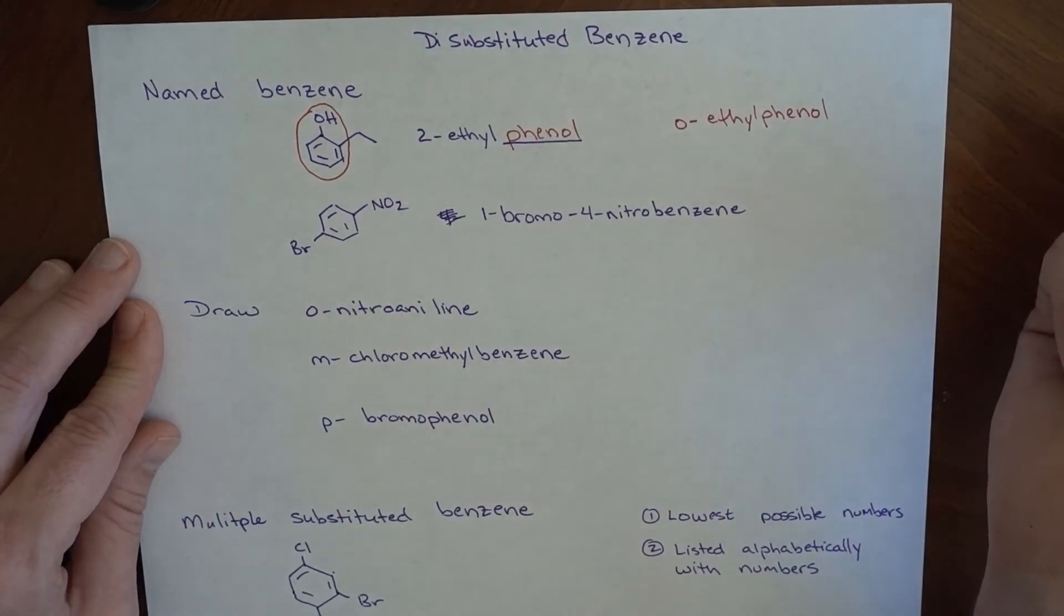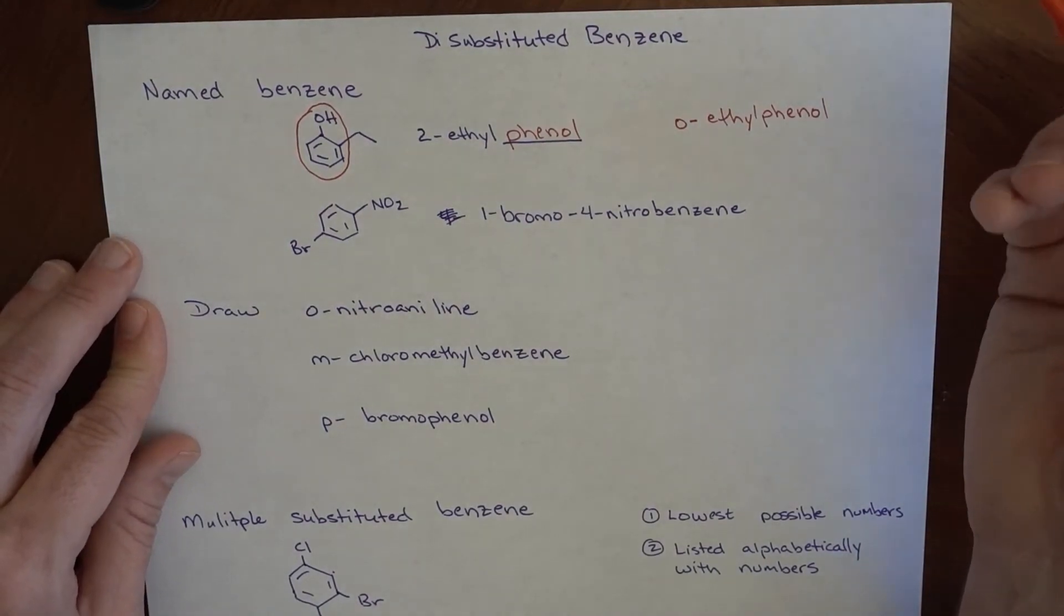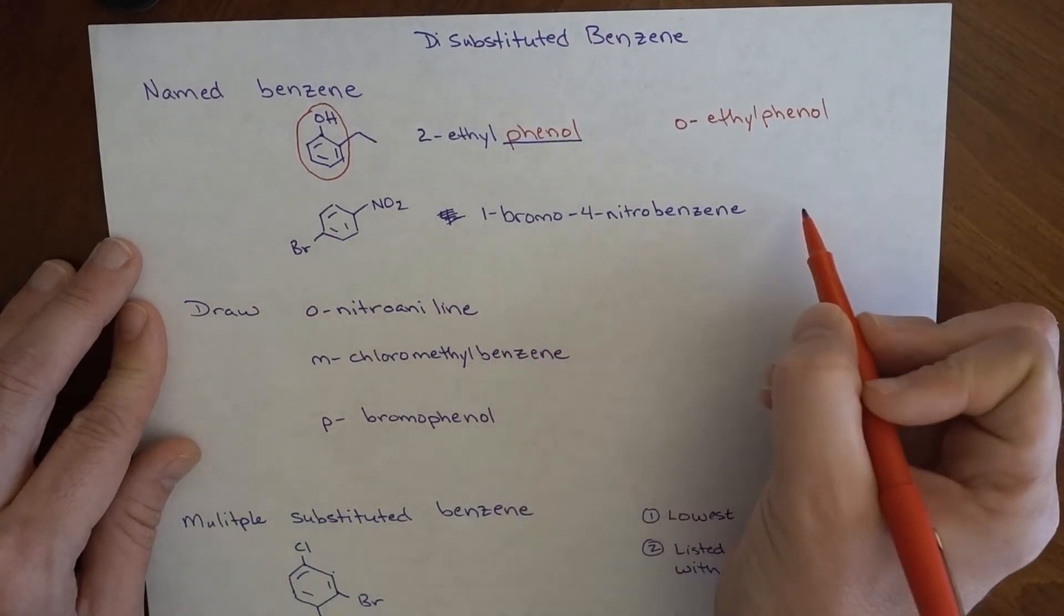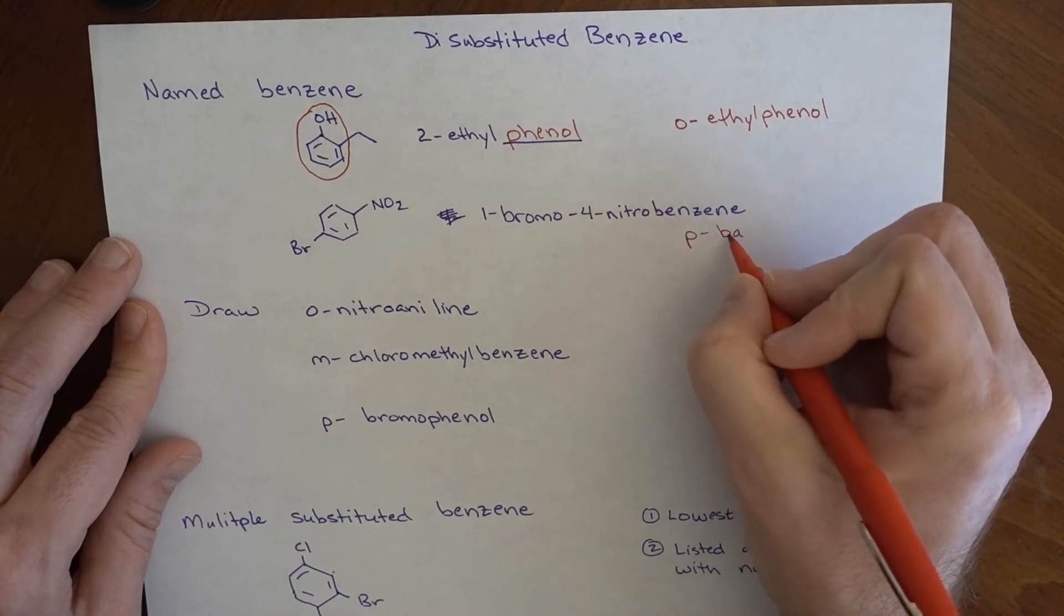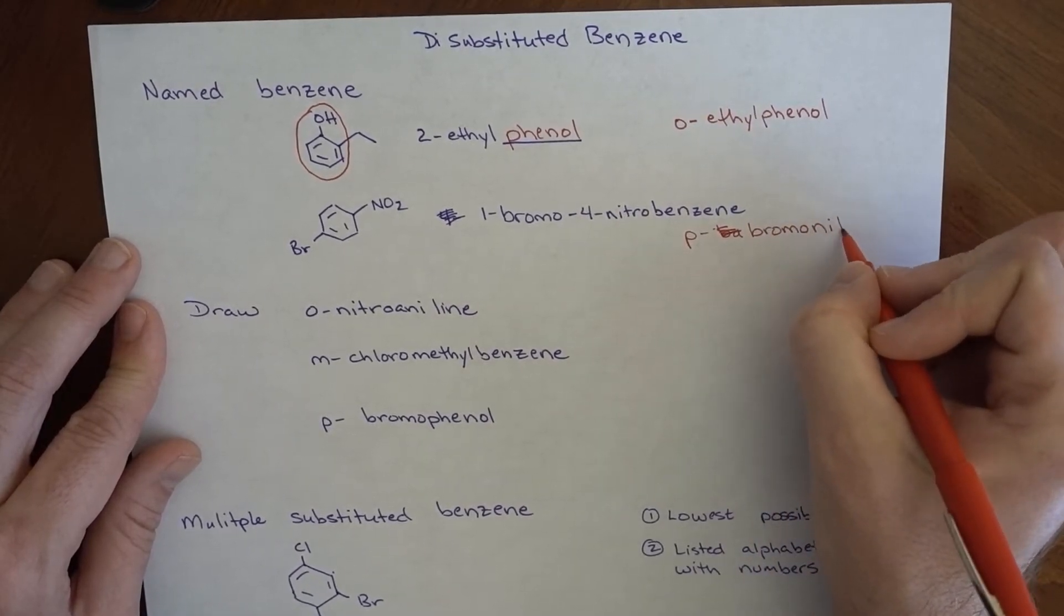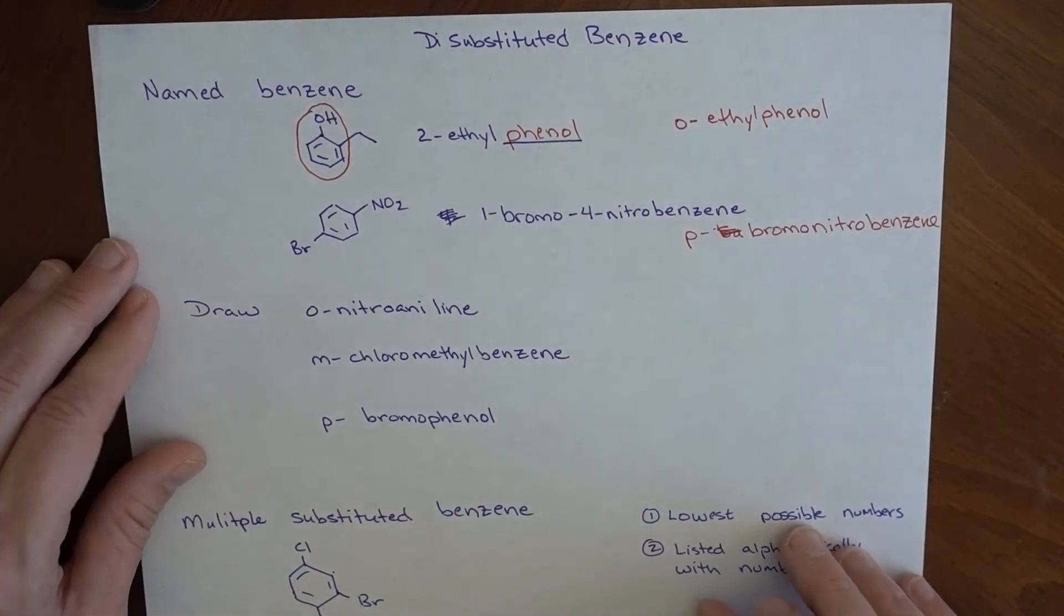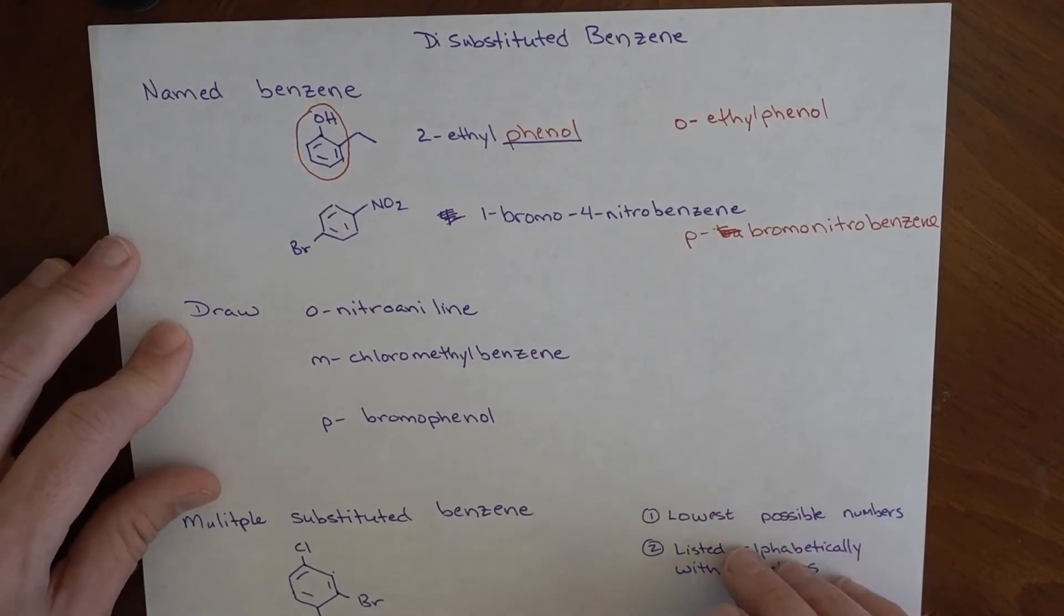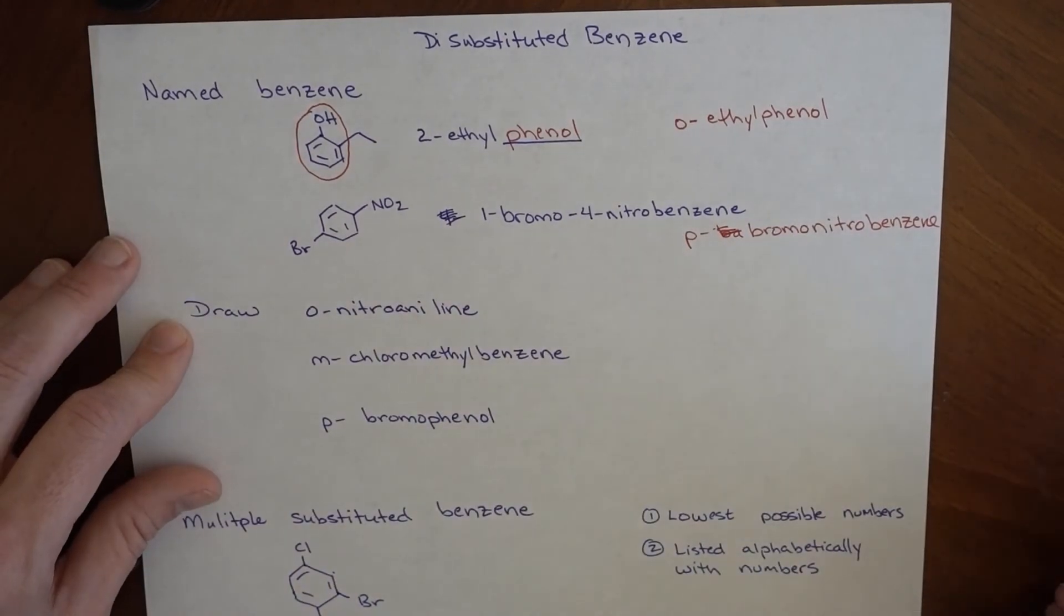This would be a 1-bromo-4-nitrobenzene, and so this would be a para-bromo-nitrobenzene. Again, if it's a named benzene, something where the name is sort of already built into it, then that is what has become the one position, and then the other is the ortho, meta, or para.